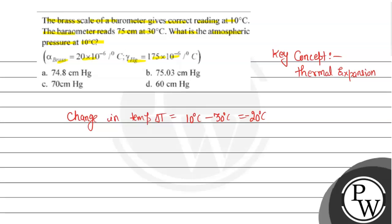The atmospheric pressure at 30 degree Celsius — the pressure value, we can write it as P1, and it will be 75 cm of Hg. We need to find the pressure value at 10 degree Celsius, so we can take that as P2.